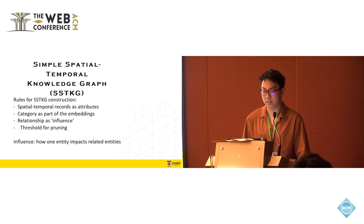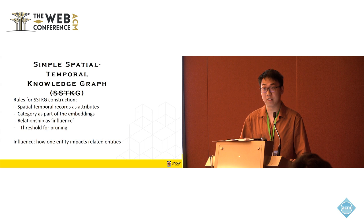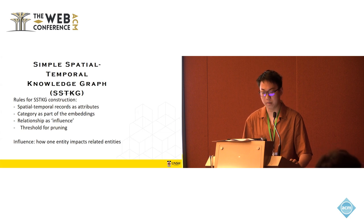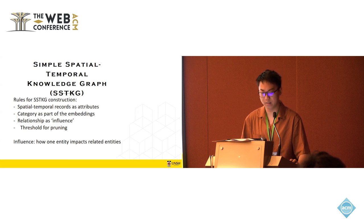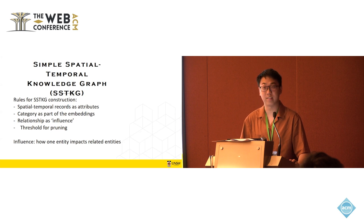So here are some rules for our simple spatial temporal knowledge graph. For the knowledge graph construction, in our framework, the spatial temporal records are first seen as attributes. Then we treat the specialized categories as part of the entity embeddings, not separately listed. Also, in our framework, the dynamic relationship is seen as influence. It represents how one entity makes effect on another, which is changing over time. And finally, to limit the number of relations, or to ease the computation, we set some threshold for pruning. In my experience, it is distance and records.